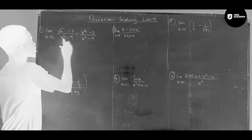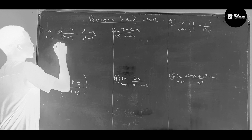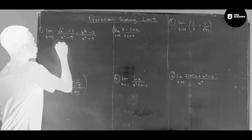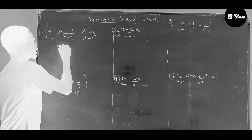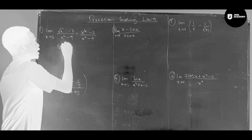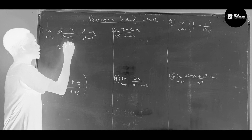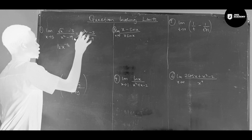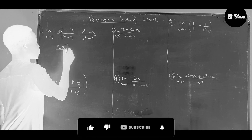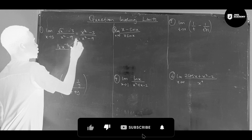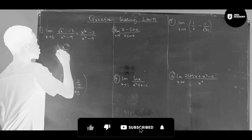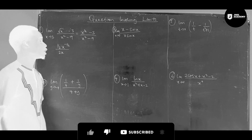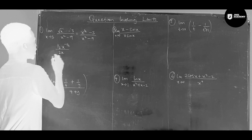So let's differentiate this using L'Hôpital's rule. Differentiating x to the power 1/2 gives 1 over 2 times x to the power negative 1/2. The derivative of the constant gives 0. Differentiating x squared gives 2x, and the derivative of the constant 9 gives 0. So this is what we are left with.